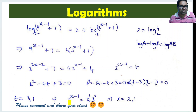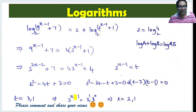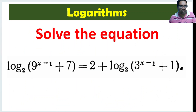We can write 3^(x-1) equals 3^1 or 3^(x-1) equals 3^0. That means x minus 1 can be 1 or 0. If x minus 1 equals 1, then x equals 2. If x minus 1 equals 0, then x equals 1. So the final solution is x equals 2 or x equals 1.